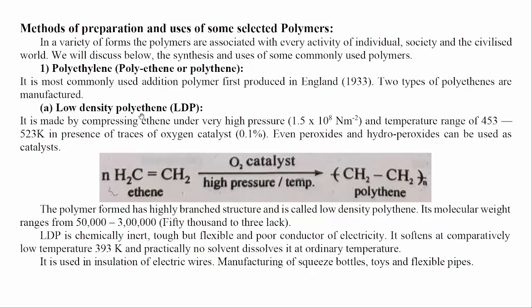A. Low-density polyethene (LDP). It is made by compressing ethene under very high pressure and a temperature range of 453–523K in the presence of traces of oxygen catalyst (0.1%). Even peroxides and hydroperoxides can be used as catalysts. The polymer formed has a highly branched structure and is called low-density polythene. Its molecular weight ranges from 50,000 to 3 lakh.